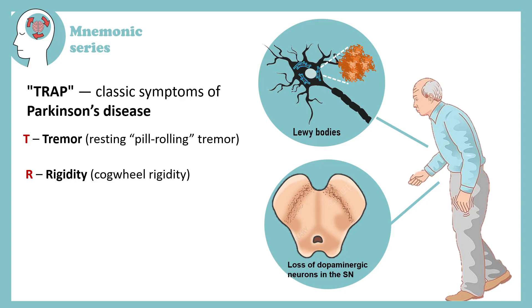R stands for rigidity, especially cogwheel rigidity. Have you ever seen a cogwheel? How rigid their movements are? Your hand movements and limb movements in Parkinson are rigid like a cogwheel.